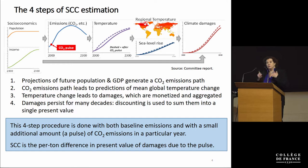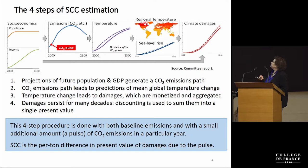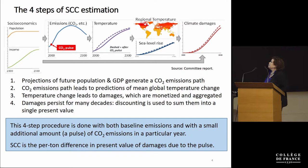Once you have those socio-economic futures, climate scientists can help you predict what this pulse of CO2 will do to mean global temperature, to changes in regional temperature, to sea level rise, and so forth. The third step is to look at the impact of these climate changes on damages — to both quantify and monetize them. And finally, they have to be discounted to the present.